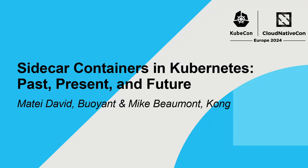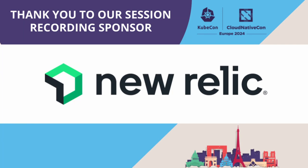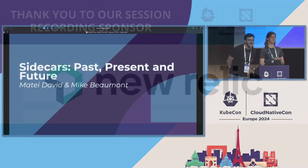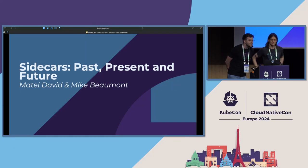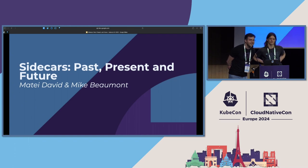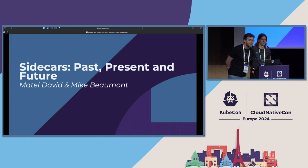Hi everybody, thanks for coming. First thing, can I get a show of hands who's using sidecars at the moment? So, all of you. Who is using version 1.29 already? Are any of you using the new native sidecars feature with 1.29? No hands. Okay, cool.